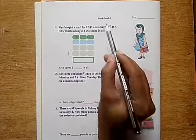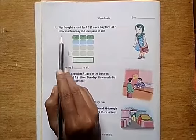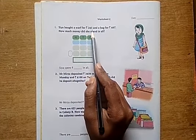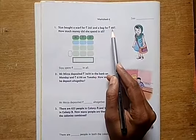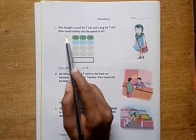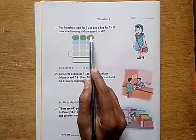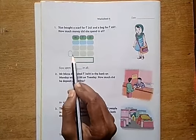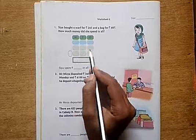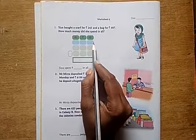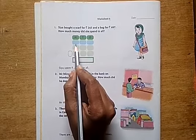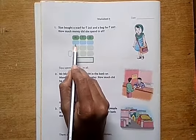Hi children, this is Worksheet 4. First problem: Siya bought a scarf for 245 rupees and a bag for 467 rupees. How much money did she spend in all? So here we should use addition. Arrange these numbers here in this green boxes, not in blue boxes. This blue boxes are for carryovers. If we need it, use this blue boxes for carryovers.